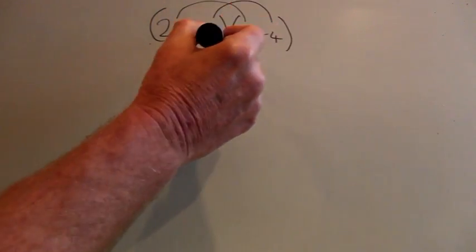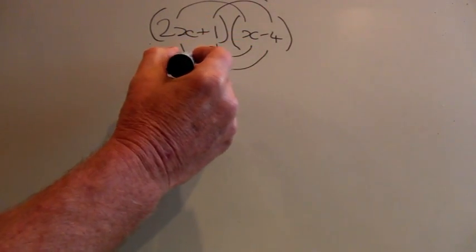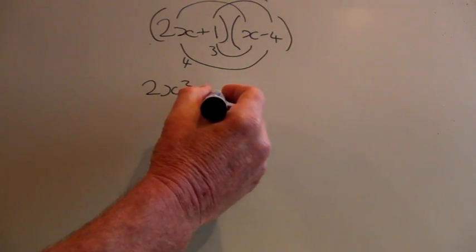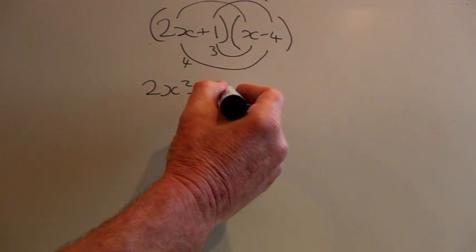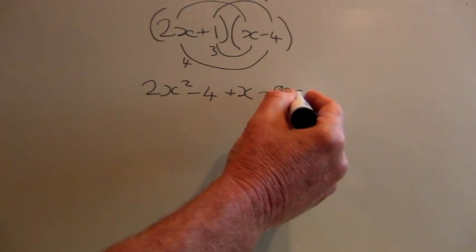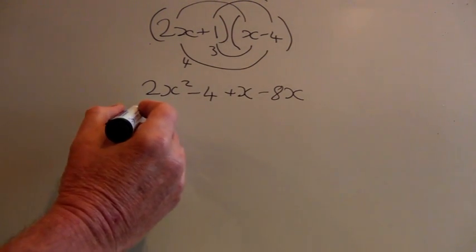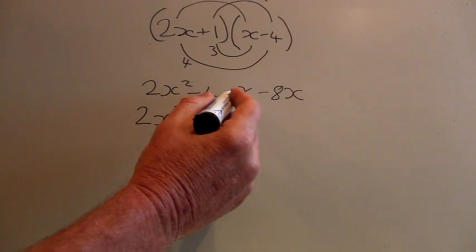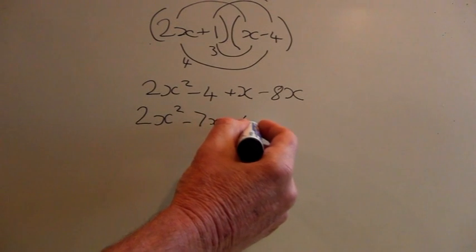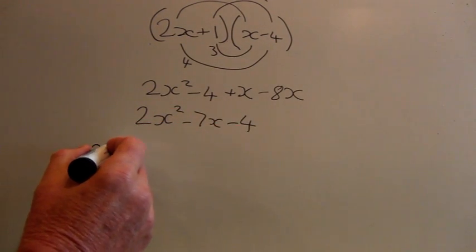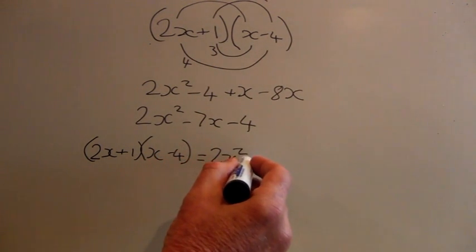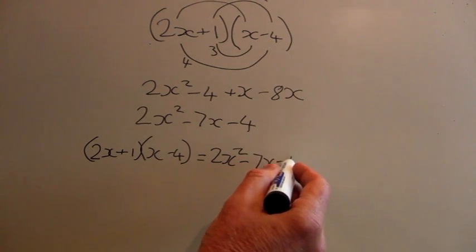Let's look at 2x plus 1 multiplied by x minus 4. Again we write the foil: 2x times x gives us 2x squared. 1 times minus 4 gives you minus 4. 1 times x gives us x. And 2x times minus 4 gives us minus 8x. Collecting the like terms we have 2x squared plus x minus 8x, which gives us minus 7x, and then minus 4. So we can write 2x plus 1 multiplied by x minus 4 equals 2x squared minus 7x minus 4.